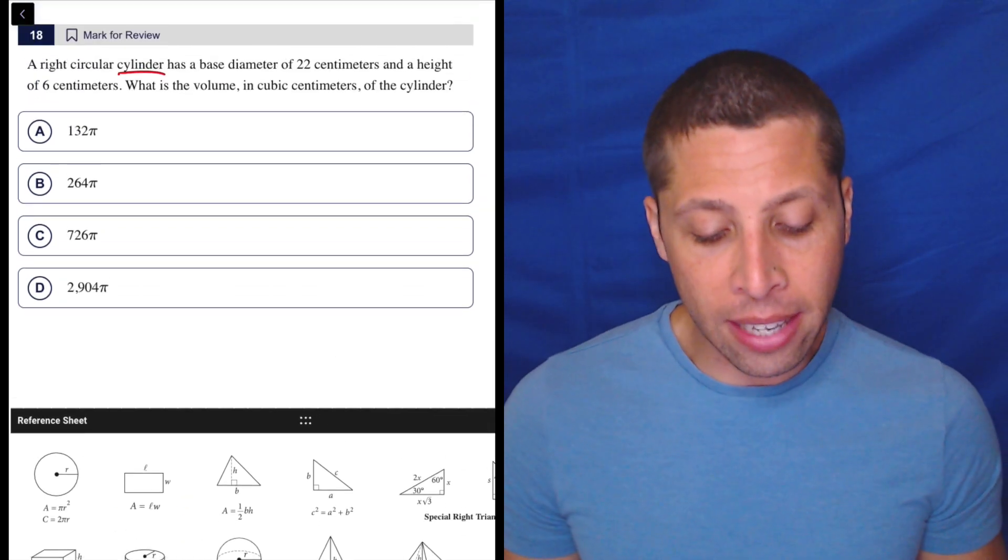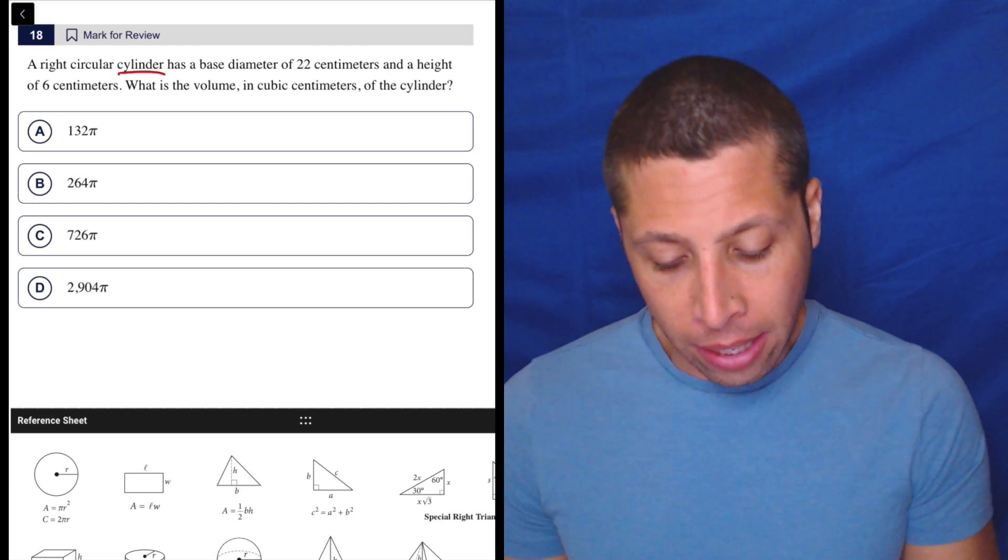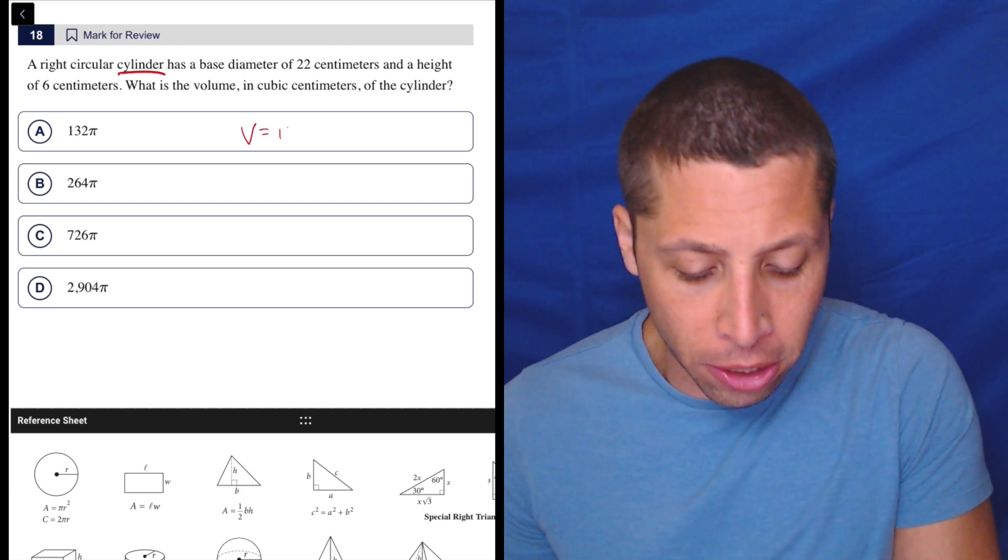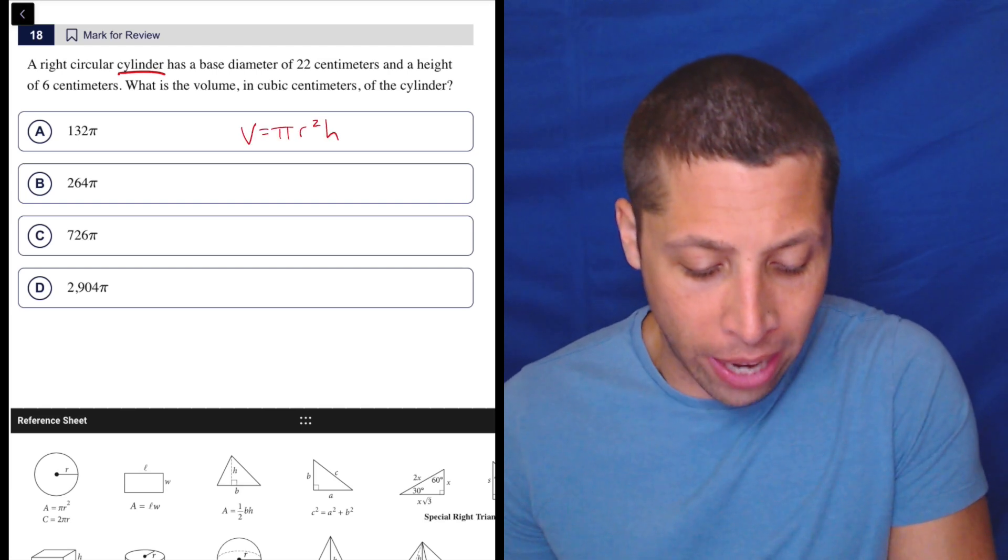So they're giving us the diameter and the height, and they want the volume. The problem here is the volume of the cylinder is pi r squared h, right?